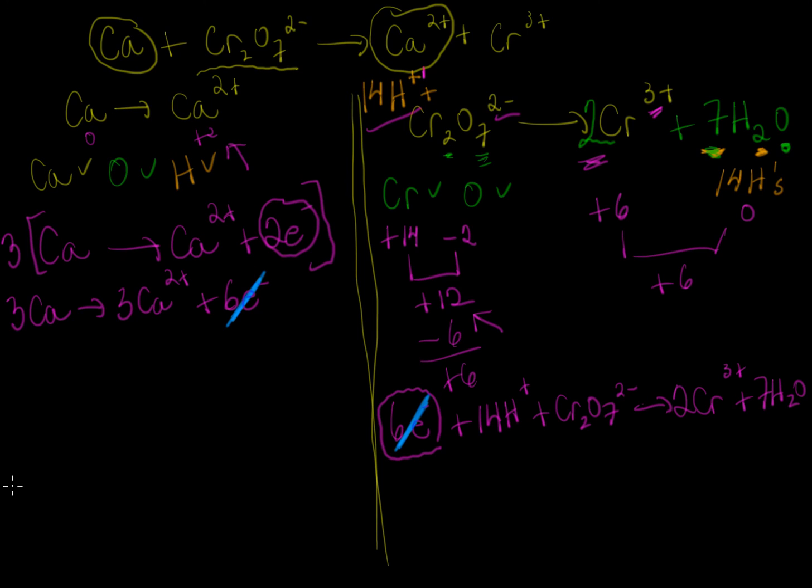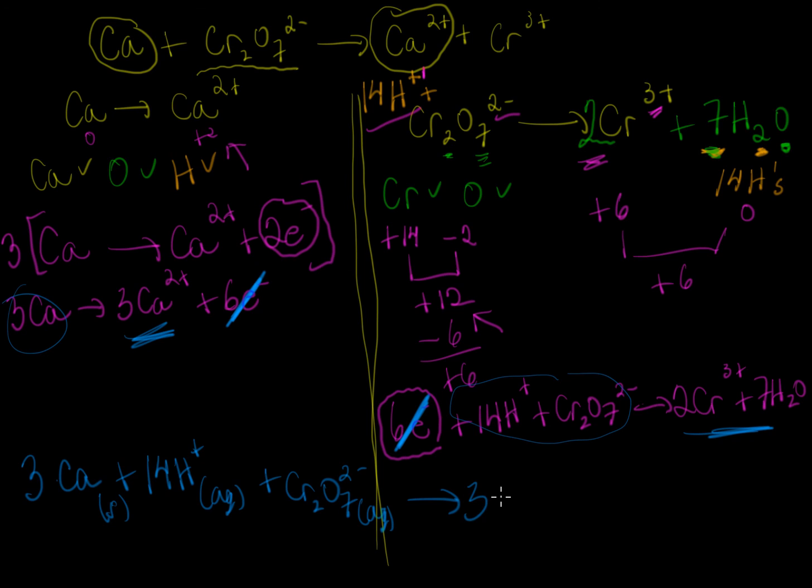Now the 6 electrons are going to cancel with the 6 electrons here when we add these two equations together. The final result is going to be 3 calcium—the left hand side here needs to be added to all the left hand side here. I'm going to put my labels on my final answer for the states—and dichromate, reaction arrow. Now I'm going to add all the right hand stuff together: 3 calcium ions aqueous, 2 chromium ions aqueous, and of course 7 liquid water molecules.